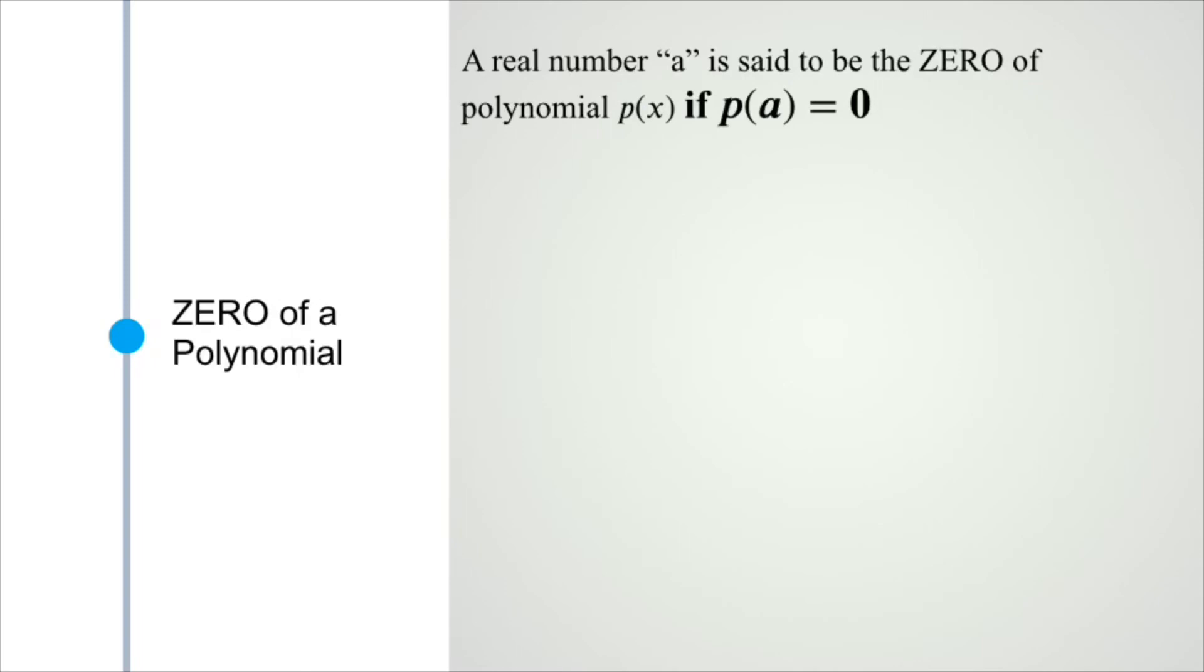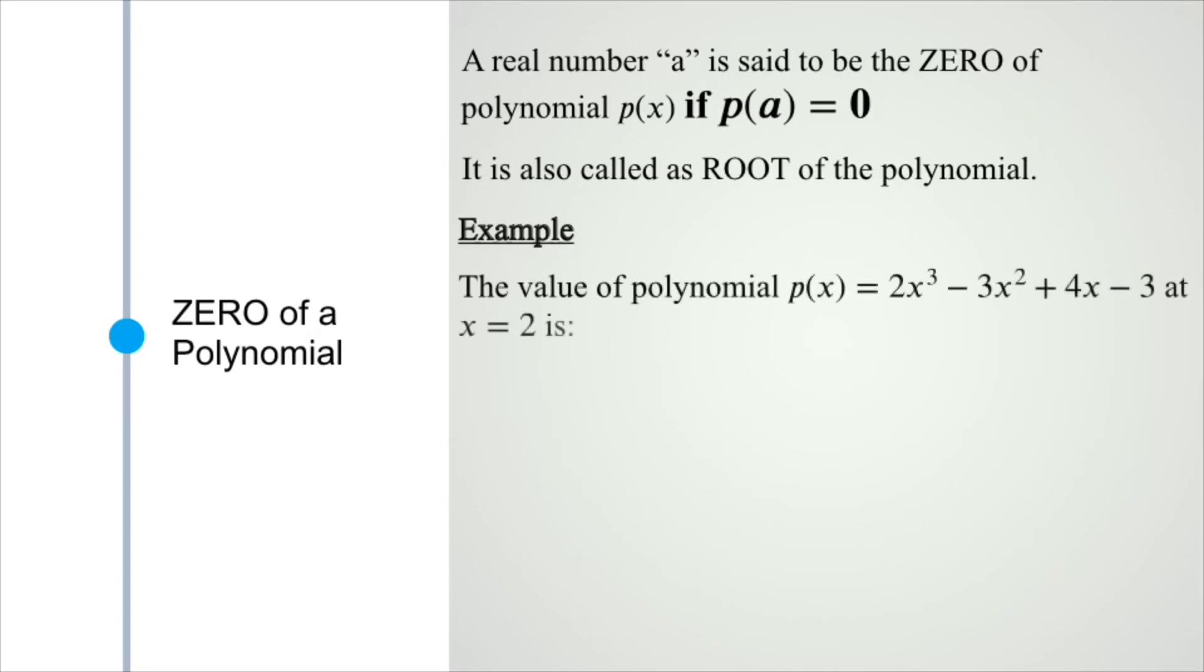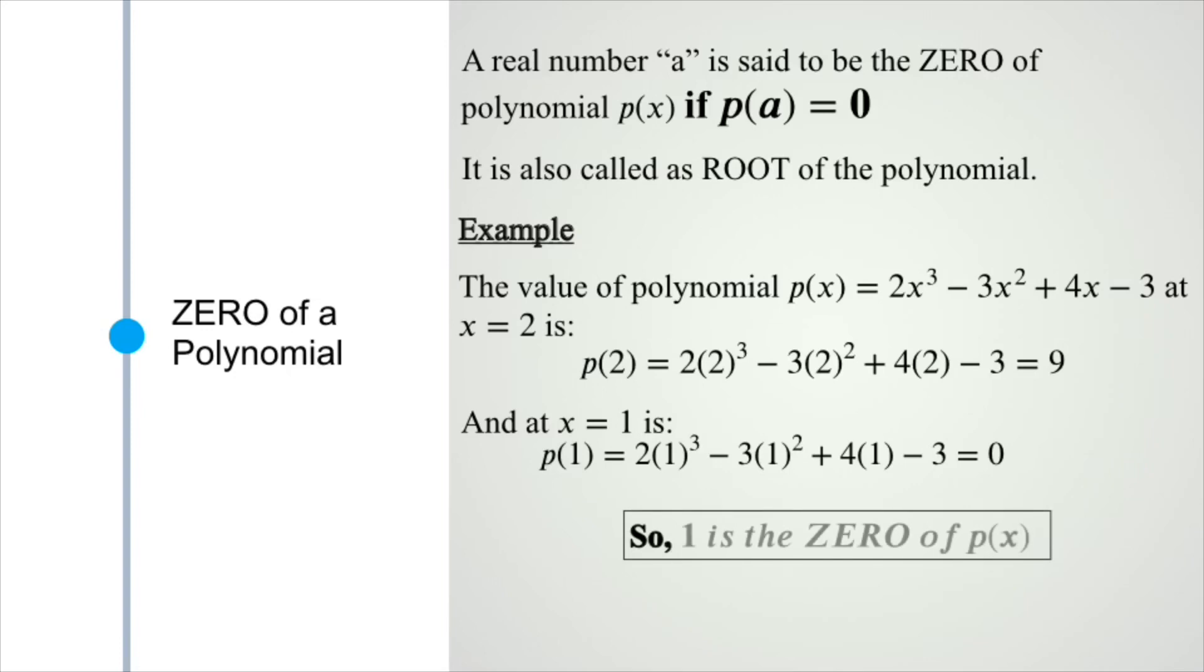When you replace the variable by a number and the value comes out to be zero, that number is called the zero of the polynomial. Here, on replacing x by one, we get answer zero, so one is the zero of the polynomial, but two is not the zero of the polynomial.